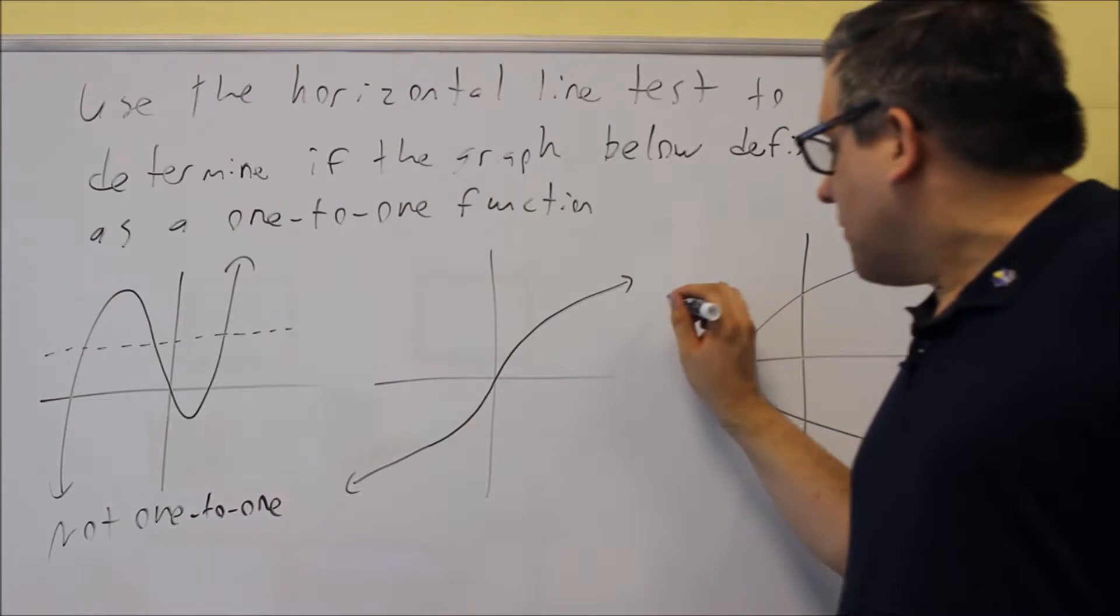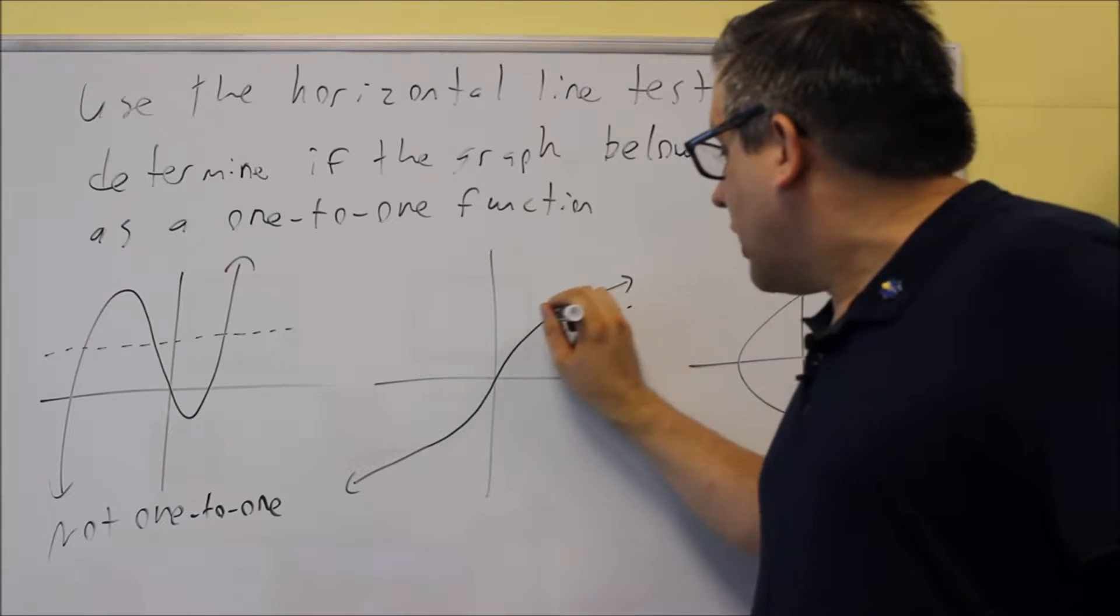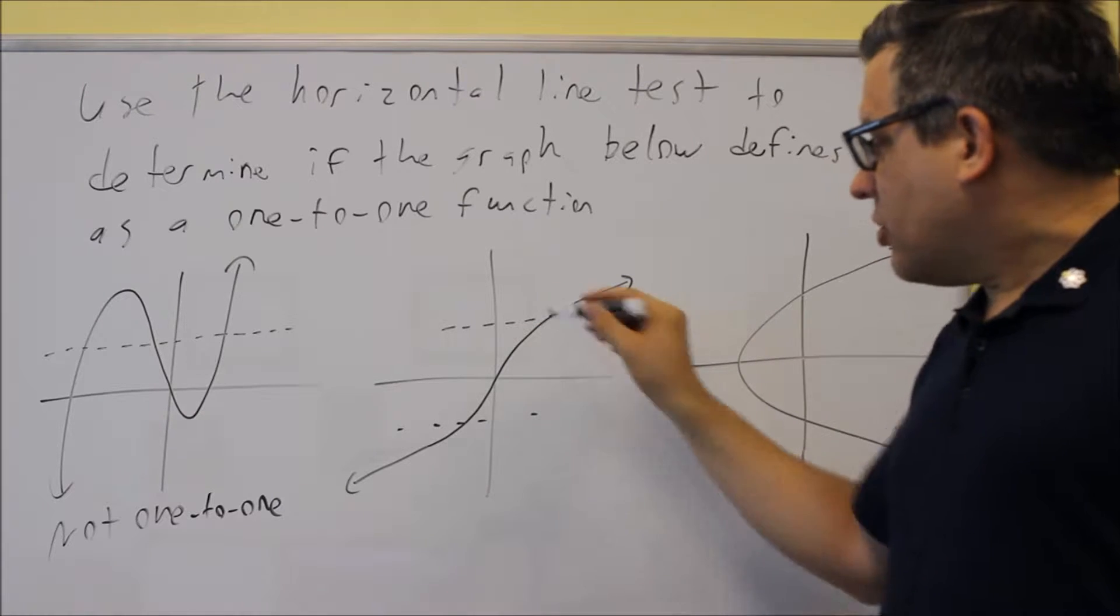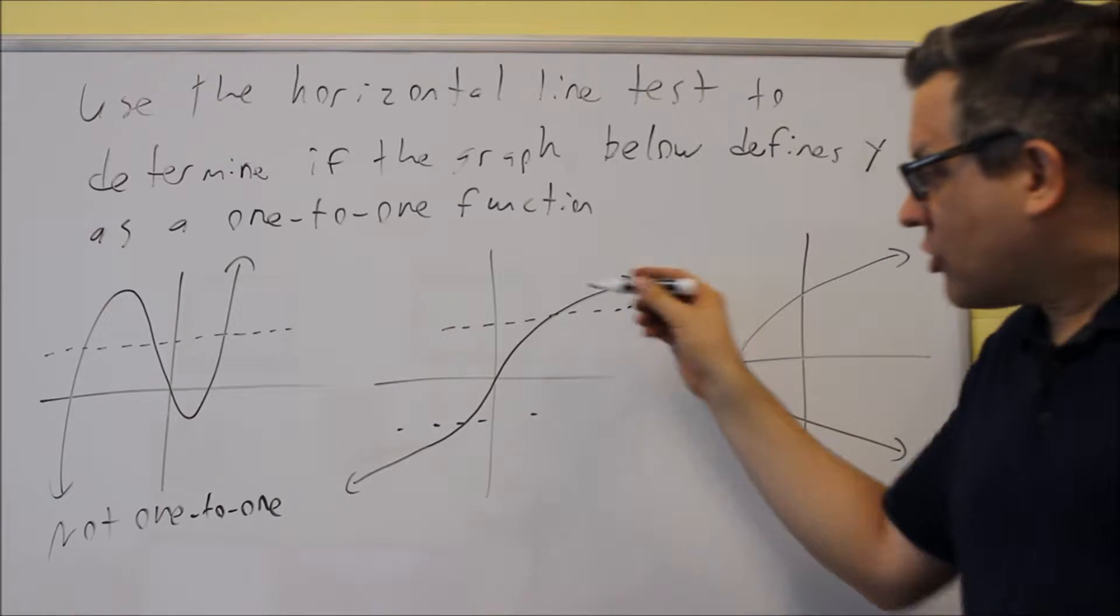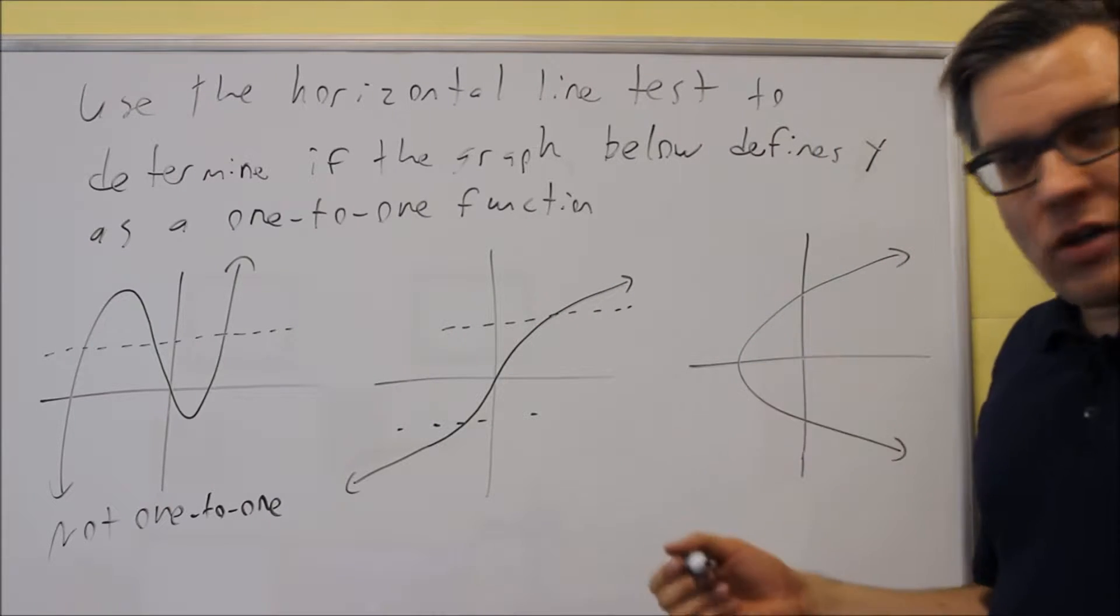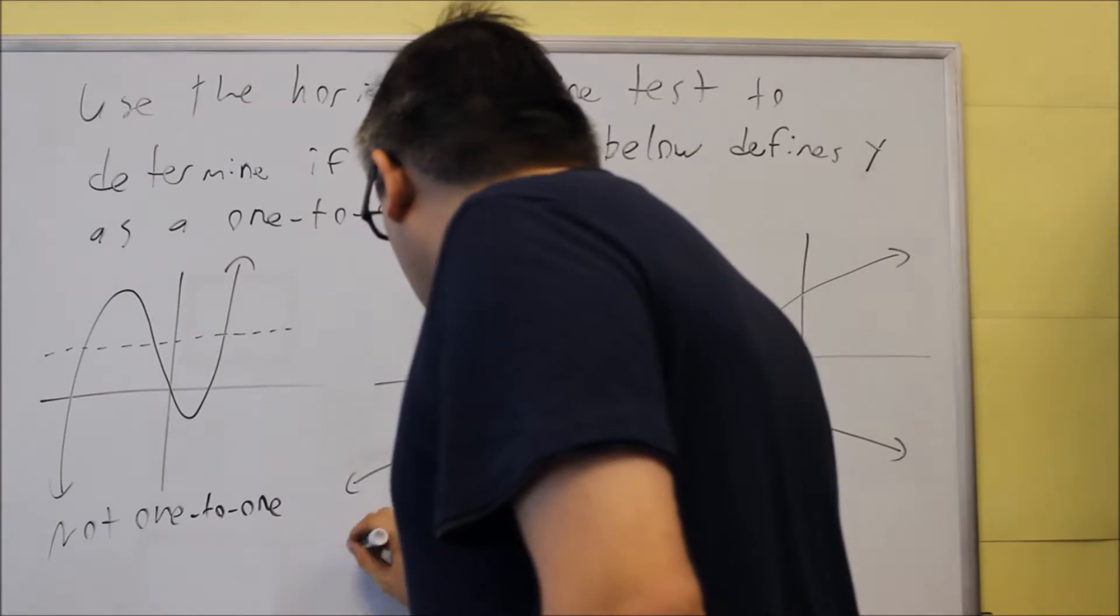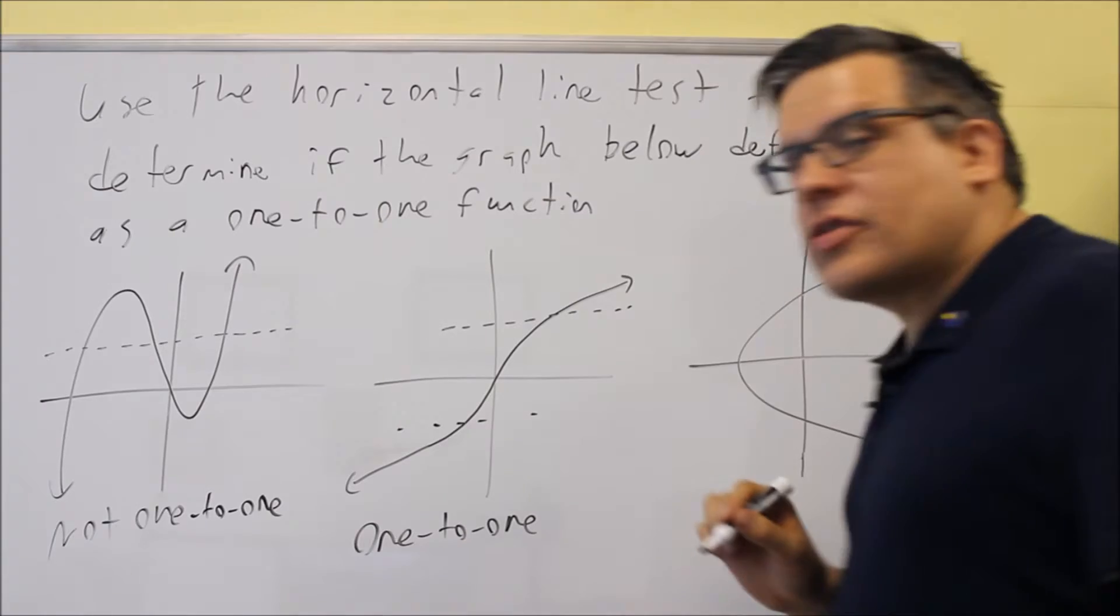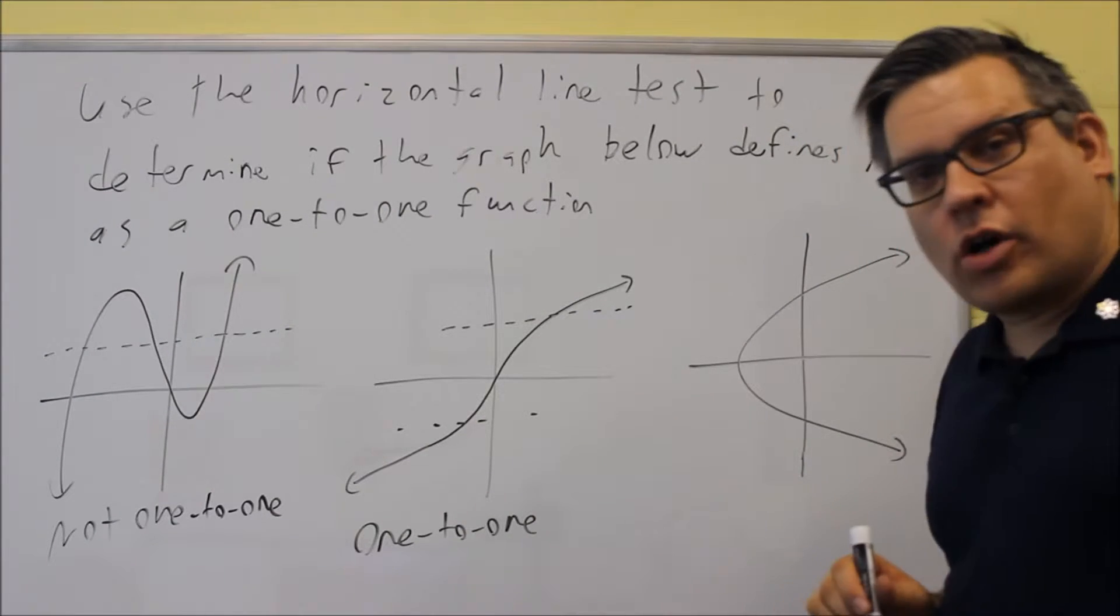Now the next one here, if I draw a line either here or here, it actually doesn't matter where I draw it. Notice that every time I do that, it's only hitting the graph in one spot. So that's telling us that this is one-to-one. One x value, you get one y value only. Okay, that's one-to-one.